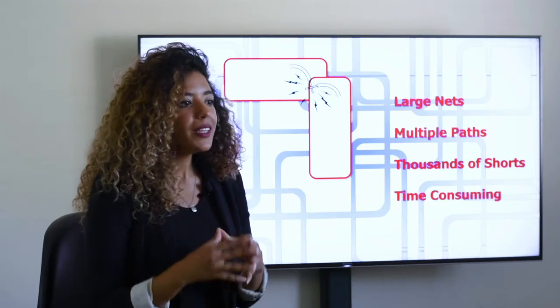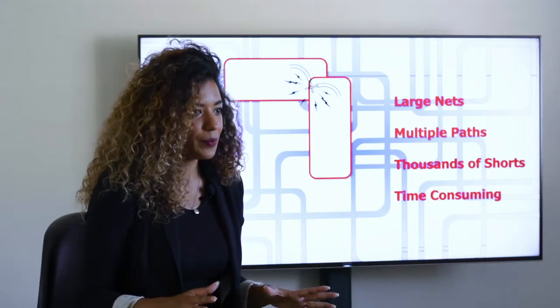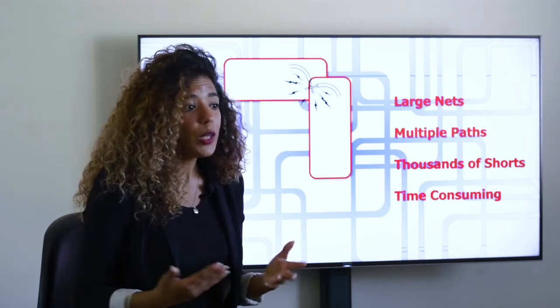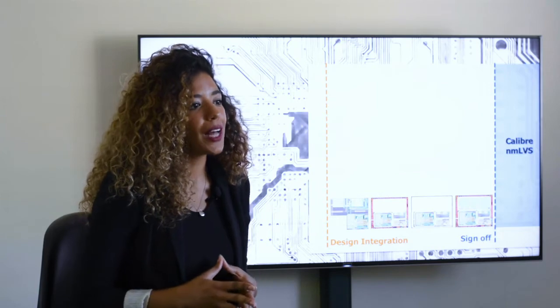Design teams report that they spend the majority of their LVS debug time addressing shorted nets. Imagine a dirty design with thousands of shorted nets — this will occur on both long and short nets, and many times there will be a power-ground short. If you've ever opened a power and ground short in the debugger and highlighted the path, the entire circuit lights up. Each shorted path needs to be analyzed and fixed, as you cannot risk a short circuit in your design. This is why we're launching Calibre LVS Recon.